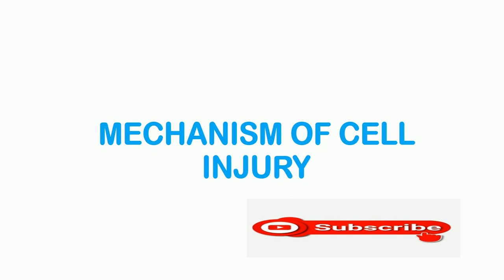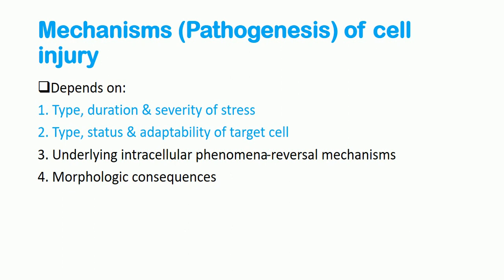This part will talk about the mechanism of cell injury. The pathogenesis of cell injury mainly depends on the type of mechanical stress - all stress that stays within the cell - and also the severity. The second factor is the type of the targeted cell, the status of the targeted cell, and what is the adaptability of that targeted cell. Adaptability means the threshold level that a cell can handle a stress.